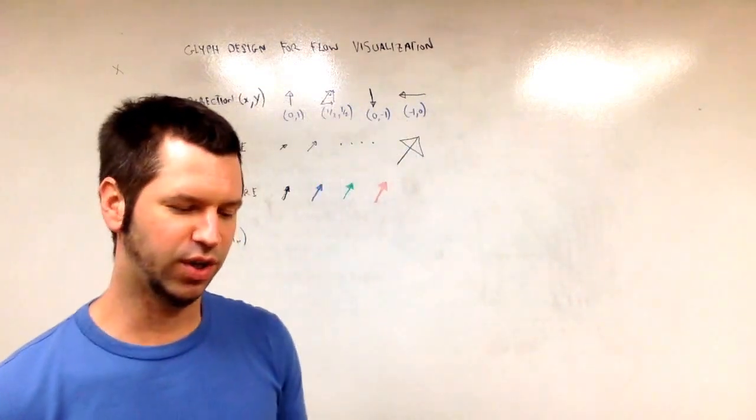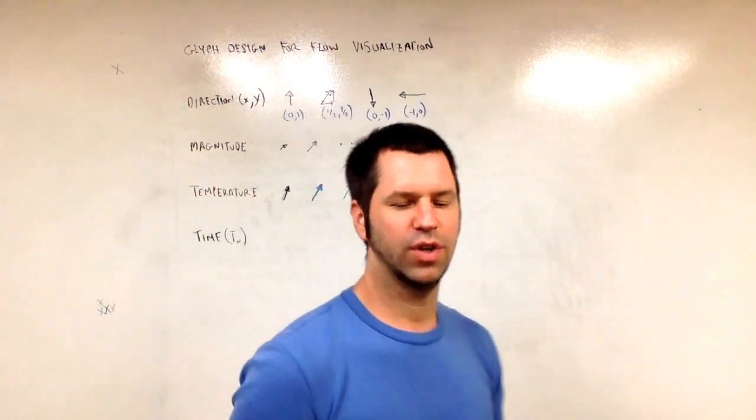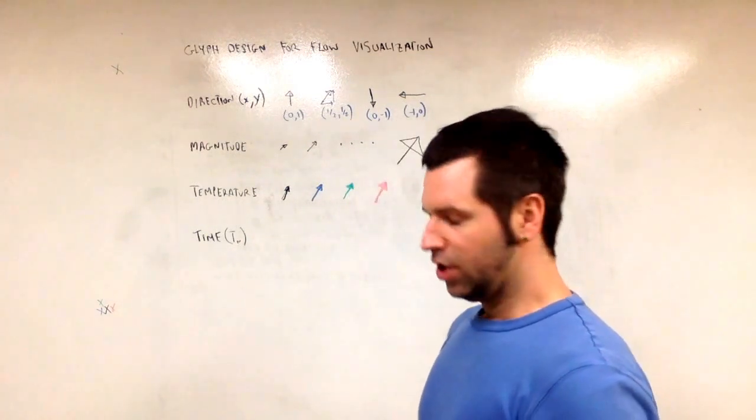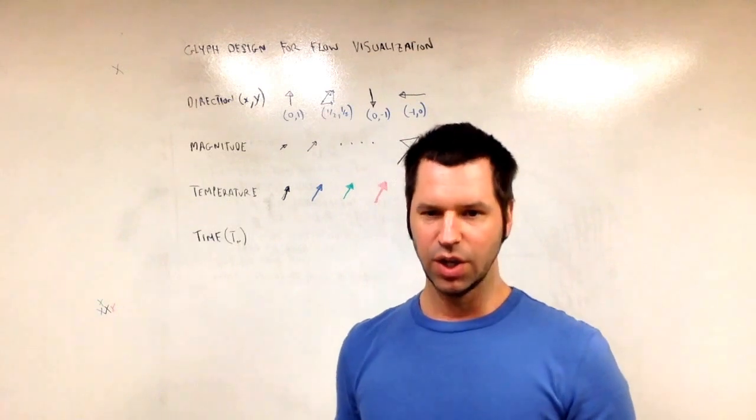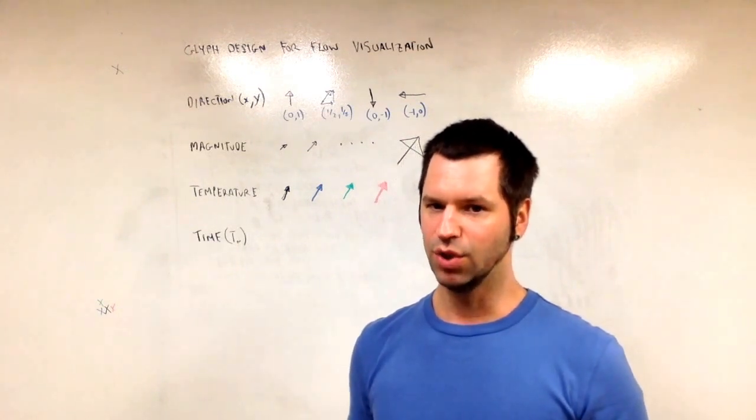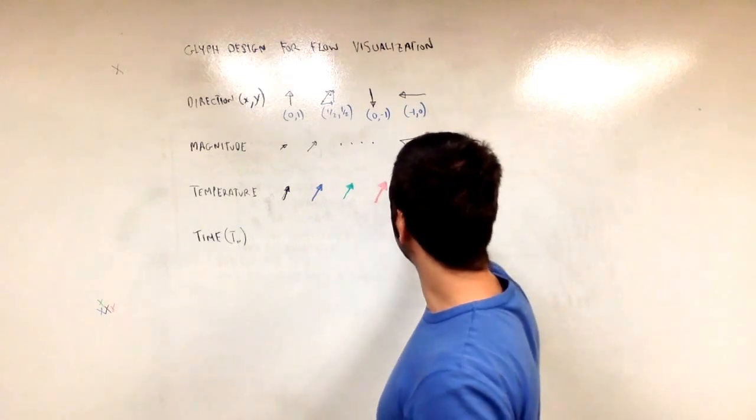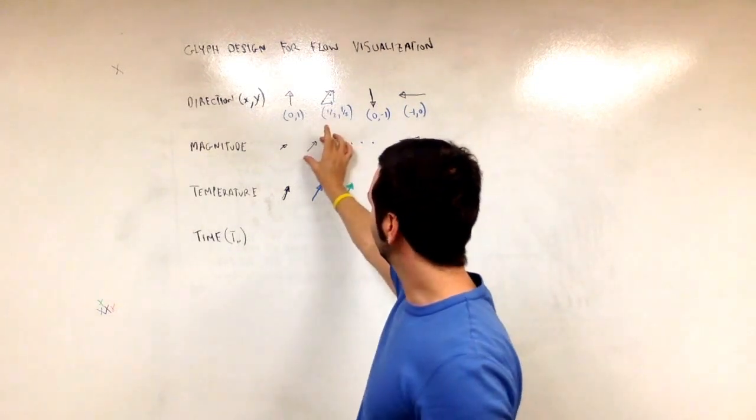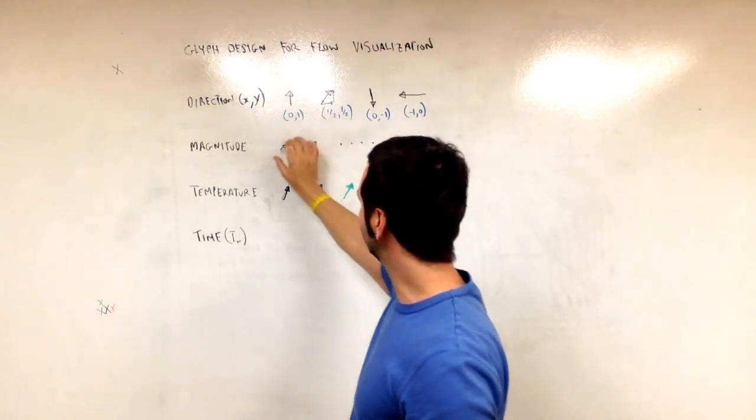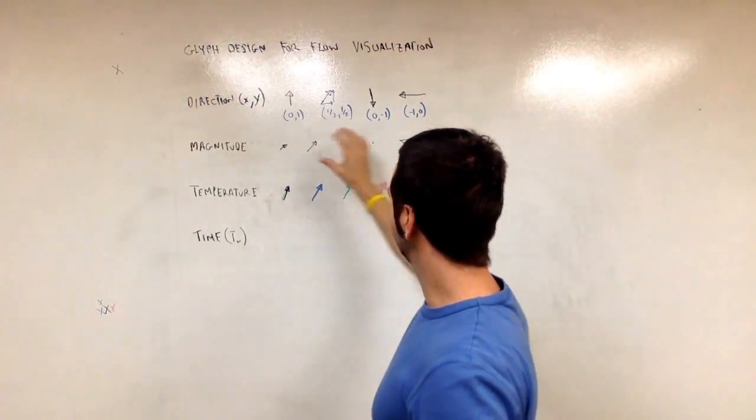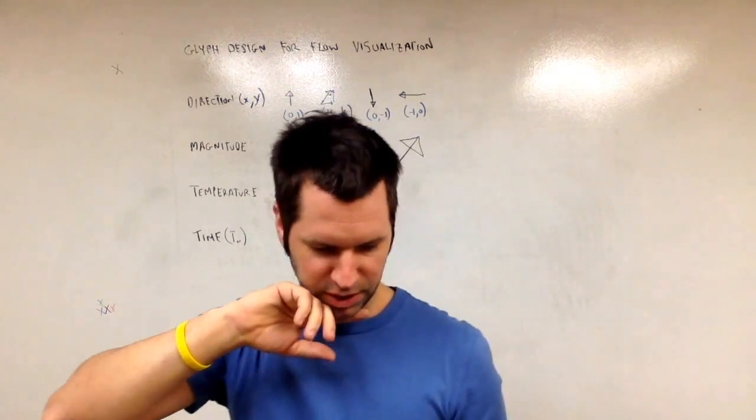Now, what about time? That's a tricky one. This is the trickiest part. Now, we could encode time into, well, one possibility is the length. We could encode time into the length, make an older glyph longer. But let's do something a little bit more fun.